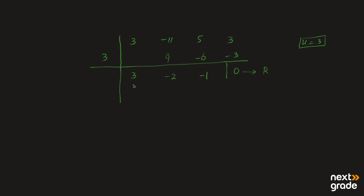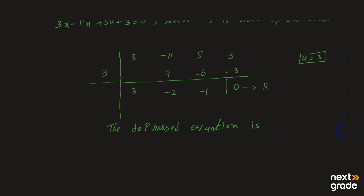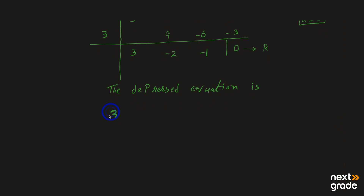اب ہم depressed equation لکھیں گے۔ جو values ملی ہیں ان کا استعمال کریں گے: سب سے پہلی value کے ساتھ maximum power لکھی جائے گی جو 3 سے ایک کم یعنی square ہوگی، پھر x کی power 1، اور constant term۔ The depressed equation is: 3x² minus 2x minus 1 is equal to 0.